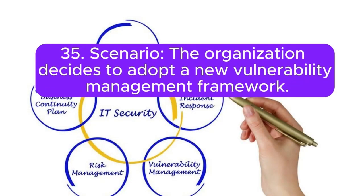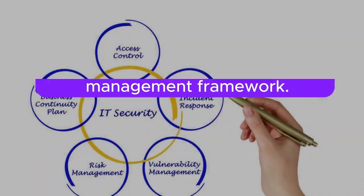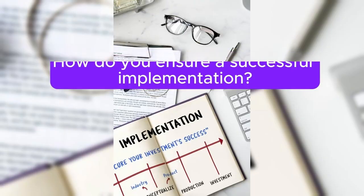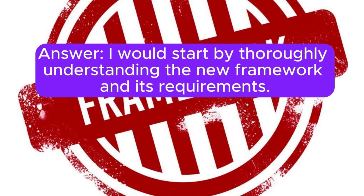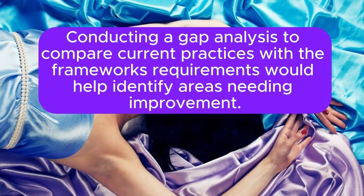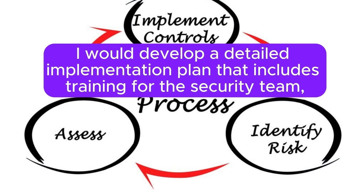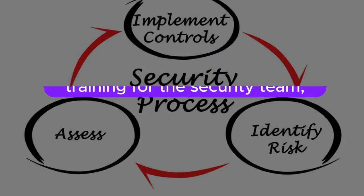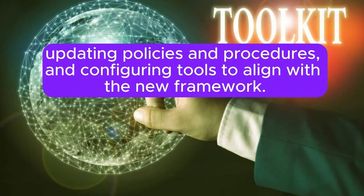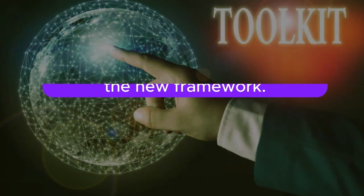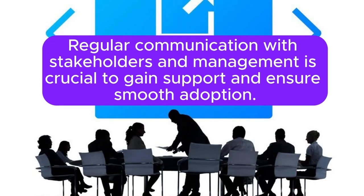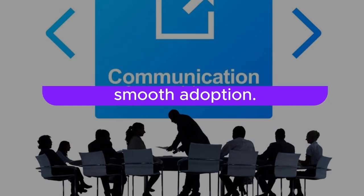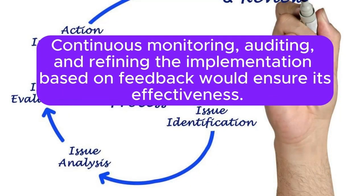Scenario 35: The organization decides to adopt a new vulnerability management framework. How do you ensure a successful implementation? I would start by thoroughly understanding the new framework and its requirements. Conducting a gap analysis to compare current practices with the framework's requirements would help identify areas needing improvement. I would develop a detailed implementation plan that includes training for the security team, updating policies and procedures, and configuring tools to align with the new framework. Regular communication with stakeholders and management is crucial to gain support and ensure smooth adoption. Continuous monitoring, auditing, and refining the implementation based on feedback would ensure its effectiveness.